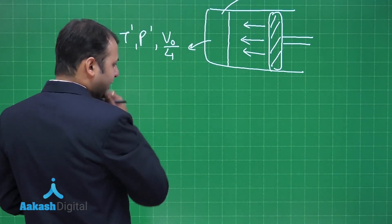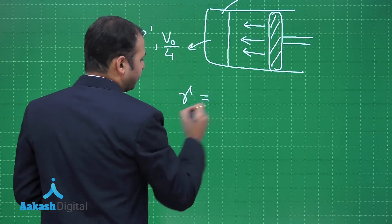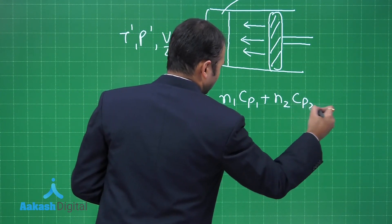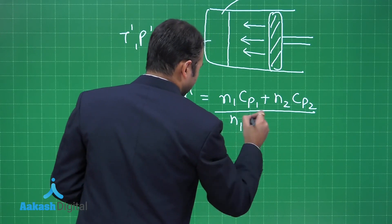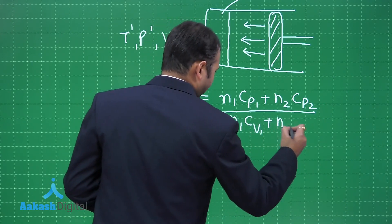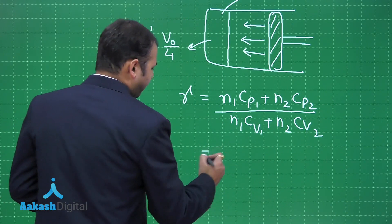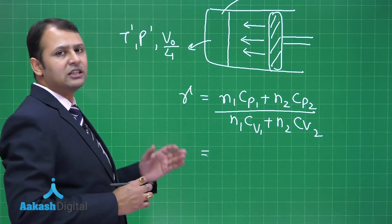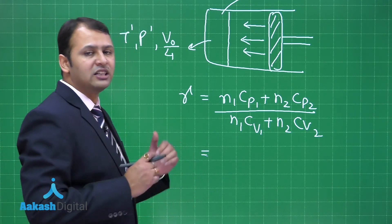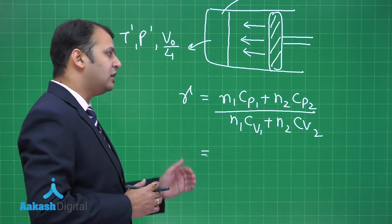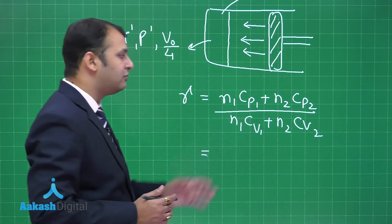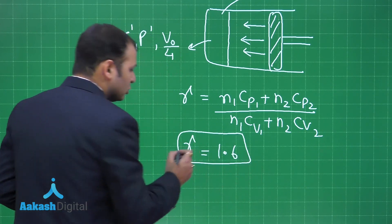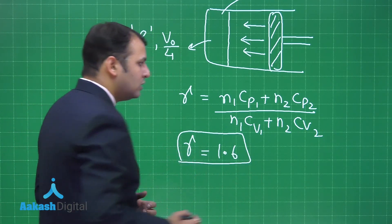Since it's adiabatic compression, we first need to find gamma of the mixture: γ = (n₁Cp₁ + n₂Cp₂) / (n₁Cv₁ + n₂Cv₂). For 5 moles of monoatomic gas: Cp = 5R/2, Cv = 3R/2. For 1 mole of rigid diatomic gas: Cp = 7R/2, Cv = 5R/2. Substituting these values gives γ = 1.6.